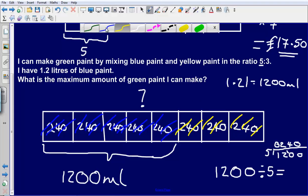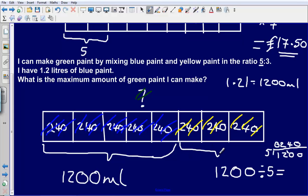We want to know how much green paint we can make. So we've got 1,200 millilitres here, plus another three times 240, which gives us 720. So how much green paint can we make? We can make 1,920 millilitres of green paint, which we could then say is the same as 1.92 litres.